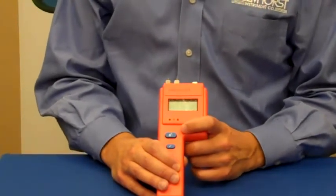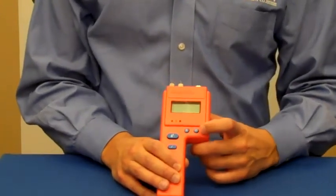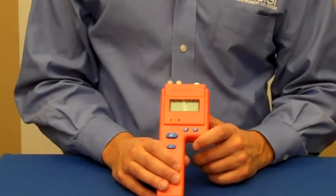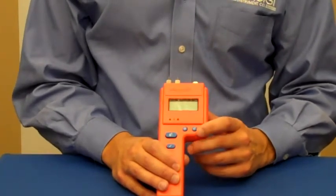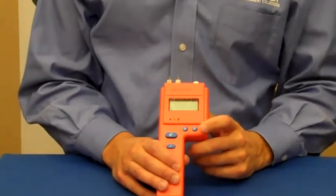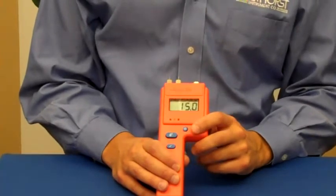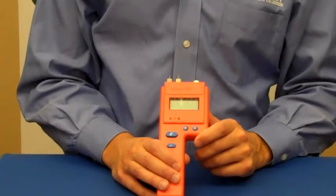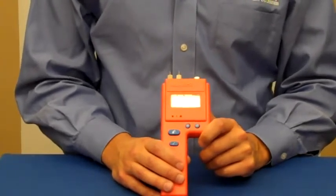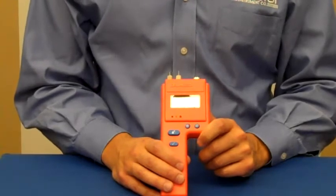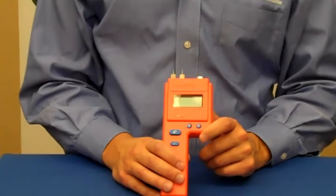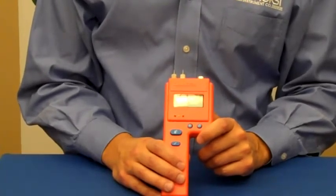Once you've set your scale to the material that you're testing, you can adjust the alarm by pressing the pound key. The alarm is user adjustable, and it's a really great feature because it allows you to go into a job, identify an unaffected area or a dry standard, and then set the alarm to that value. Once you measure the material that you've set the alarm to, any time the buzzer goes off, it alerts you that that section of the material is at a higher moisture level than your dry standard or your unaffected area. The user adjustable alarm is a Delmhorst exclusive as well.